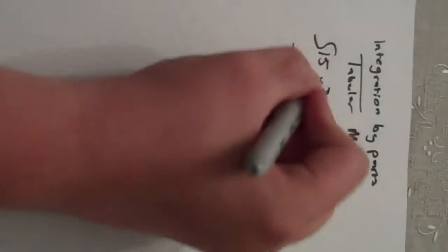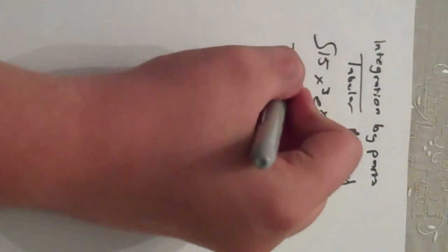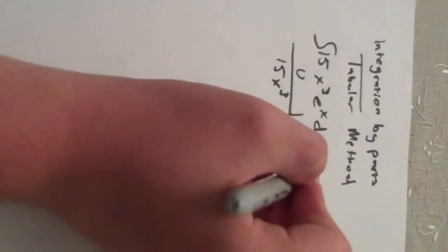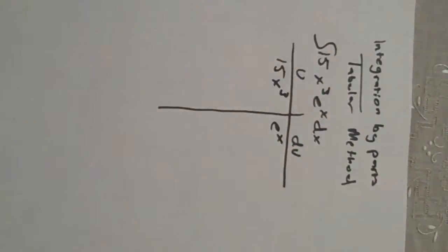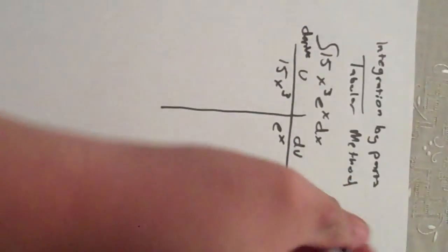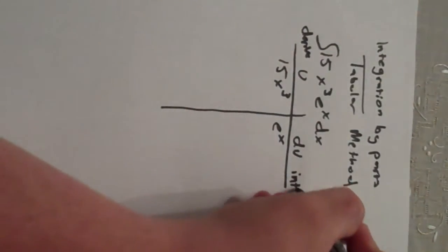And what we're going to do here is let 15x cubed be the u and e to the x be the dv. So what we do here is we are going to derive the u and we are going to integrate the dv.